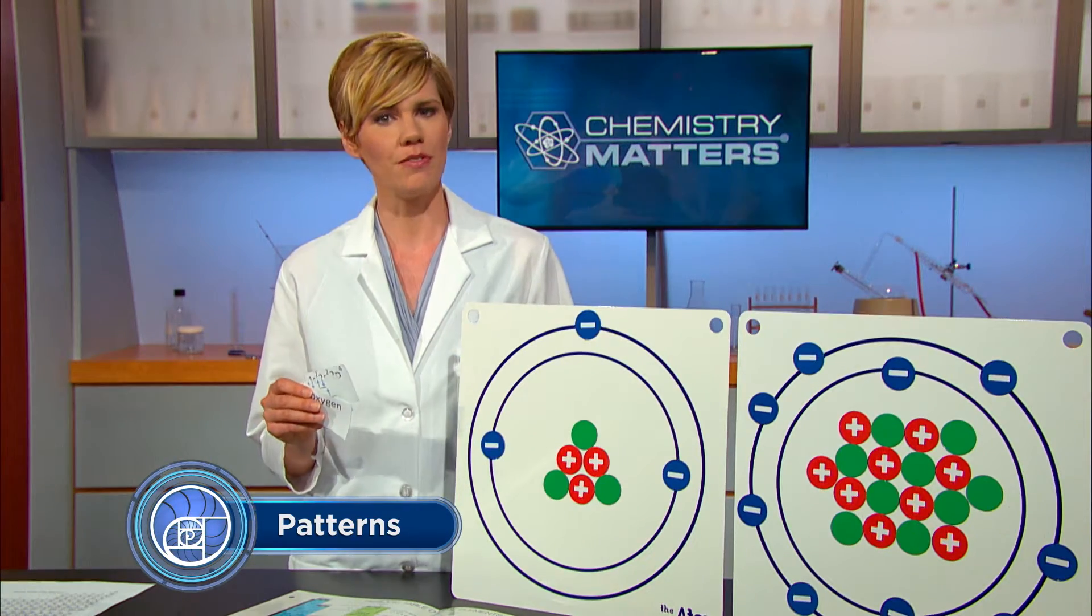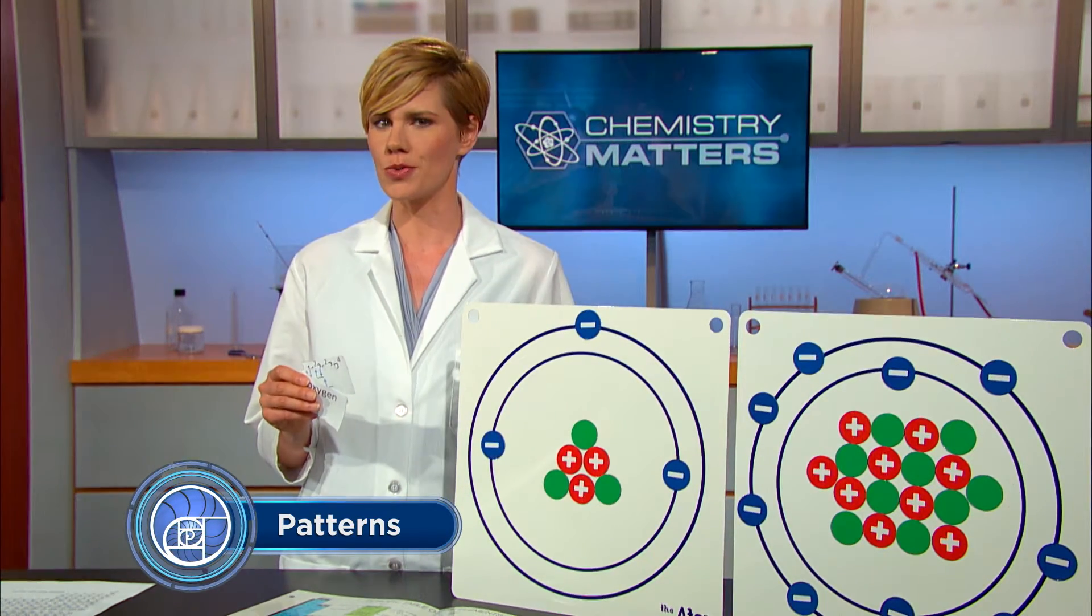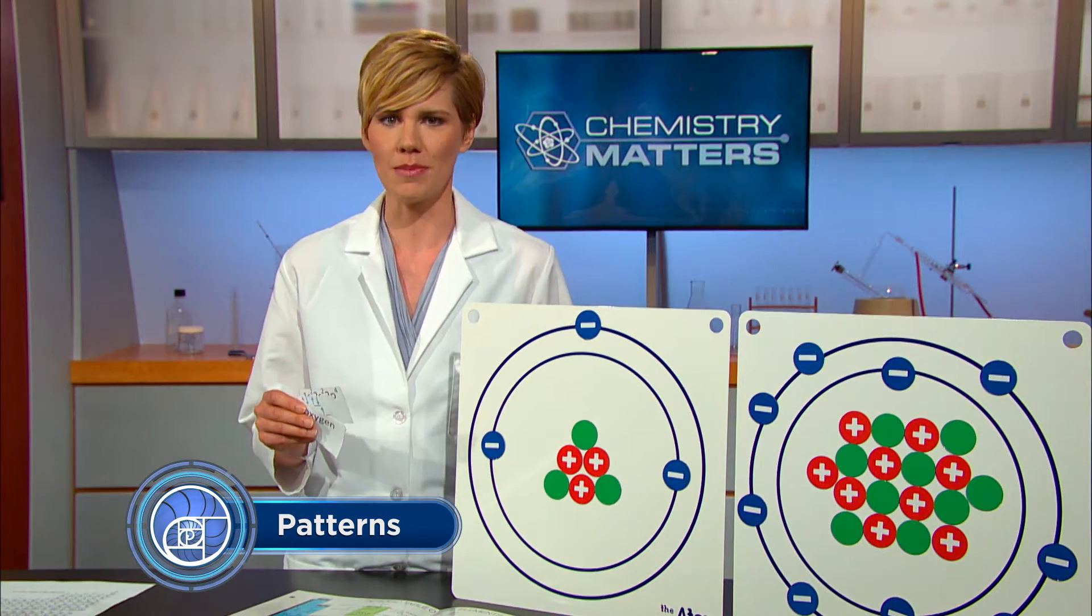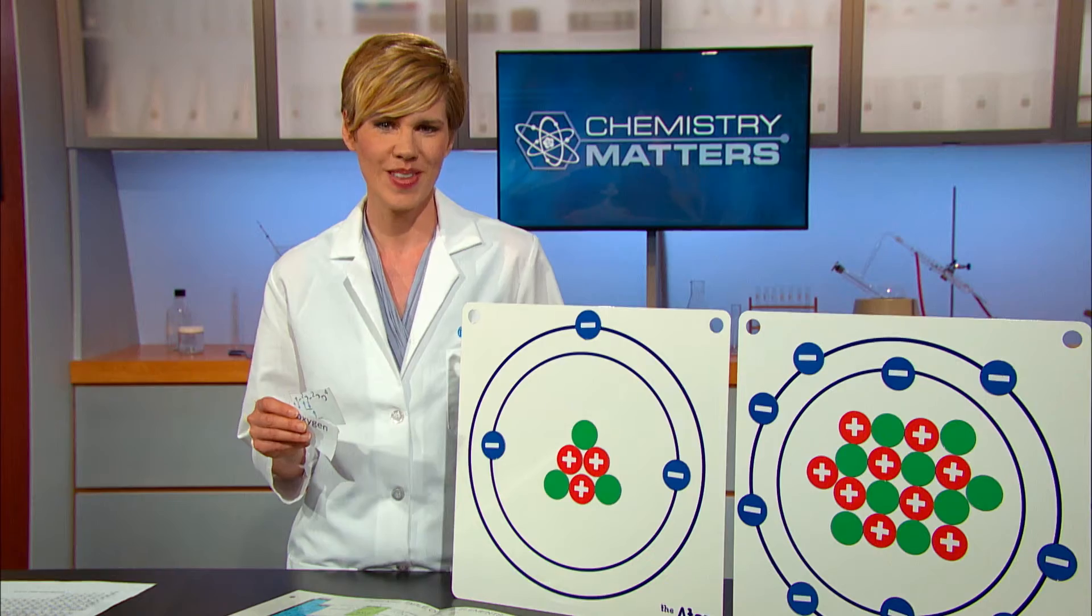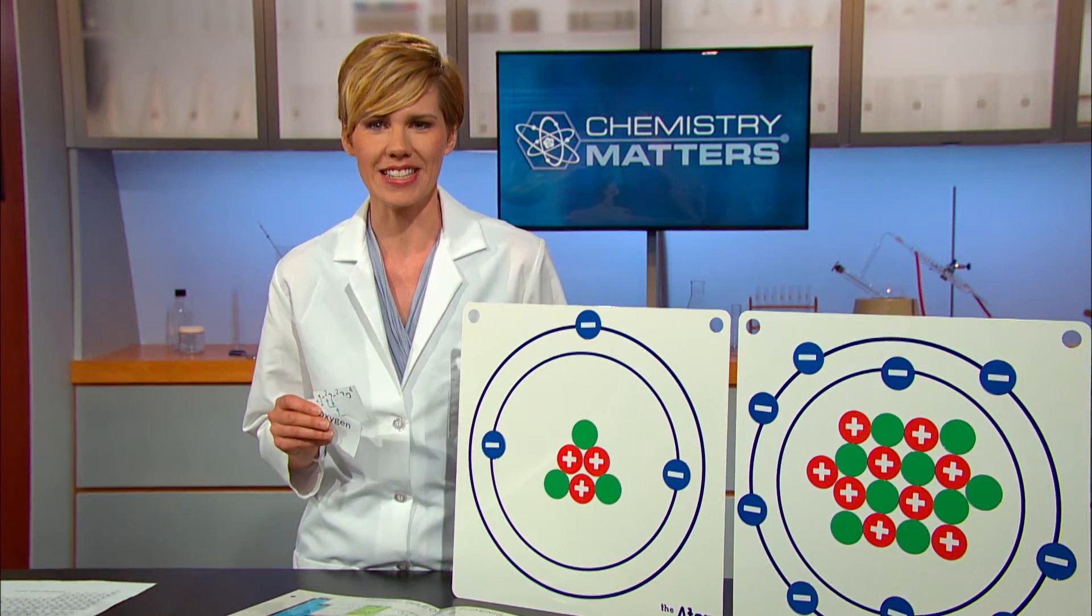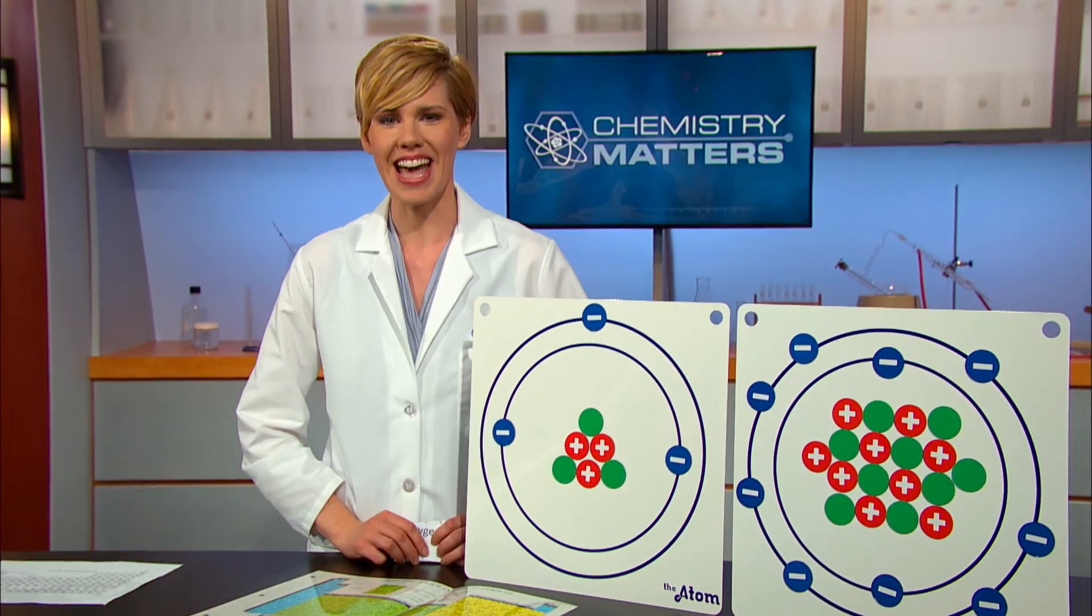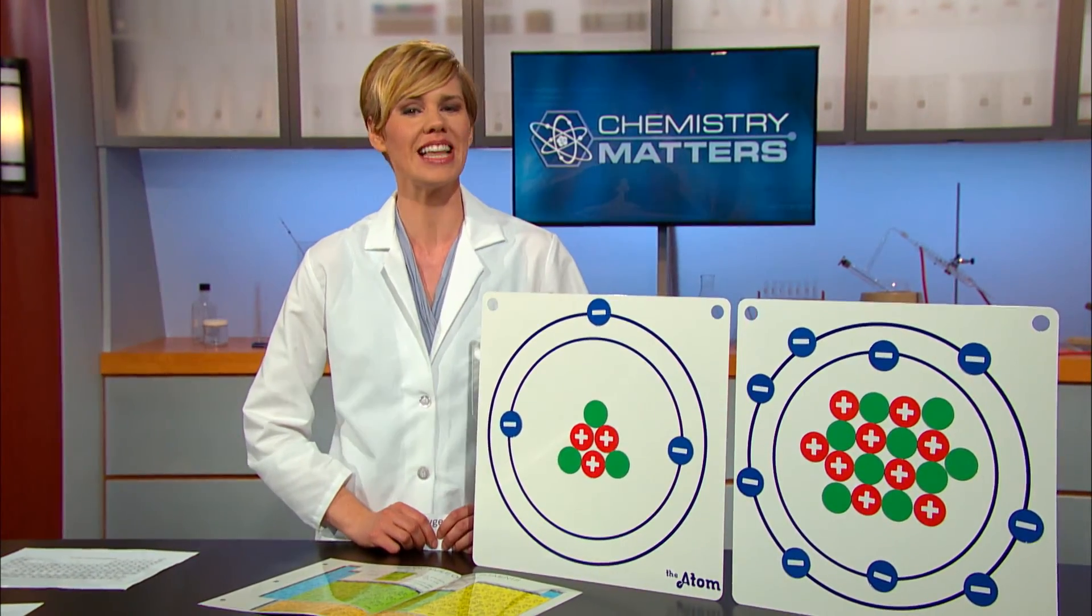For example, maybe you can figure out how a pattern of numbers and arrows represents an element, rather than simply making individual piles of all the element symbols and all the arrows. So grab your cards and start organizing. Once you think you've cracked the code, go to the next video on the playlist and catch up with our students to see what we can learn about electron configuration.